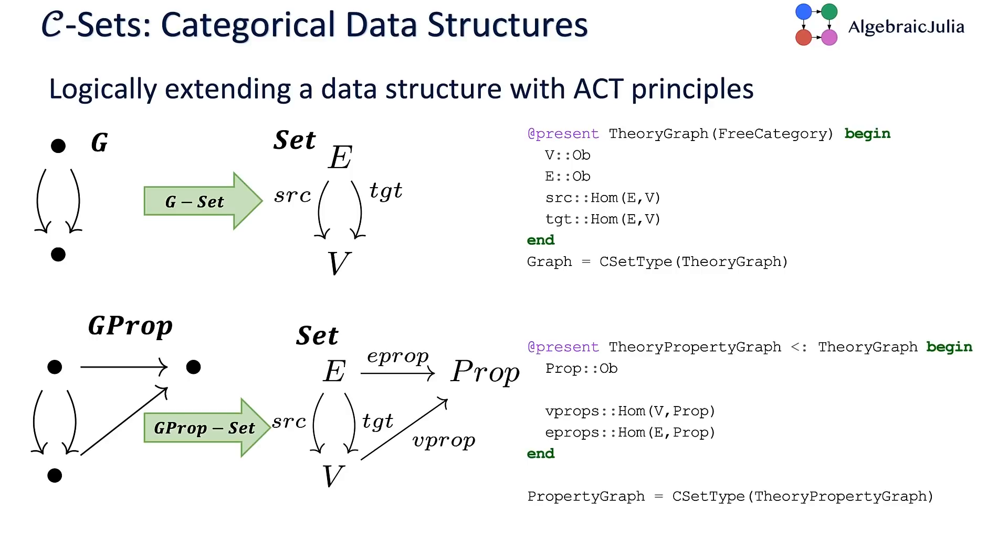Here's the thing we're extending right now, which is called CSETs or categorical data structures. You can think of these like the relationship between a database schema and a database instance—the actual data that goes in the database. You have some schema that describes what are the parts of the data and how do they relate to each other. Then for every part, you have some set of values.